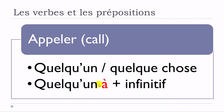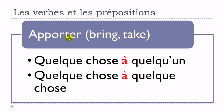Next verb: apporter. Apporter quelque chose à quelqu'un — no preposition before quelque chose. Or the same structure: apporter quelque chose à quelque chose. So: apporter quelque chose à quelqu'un, apporter quelque chose à quelque chose.